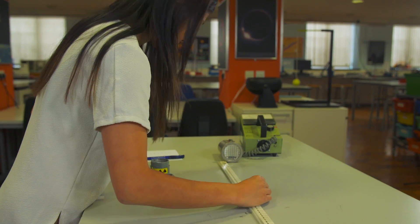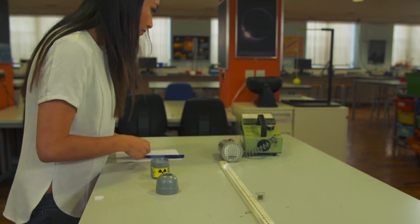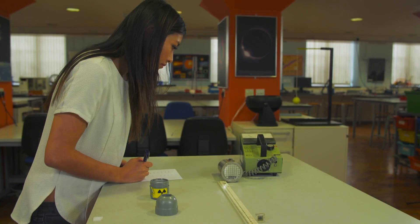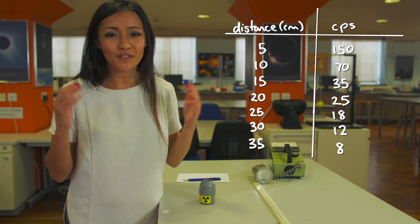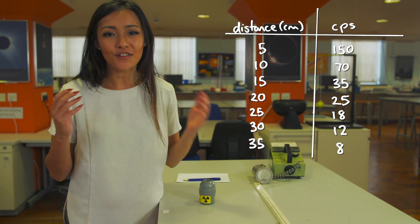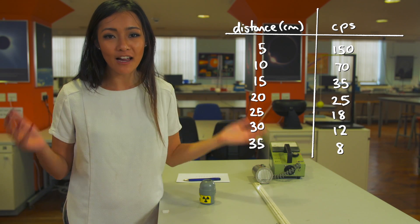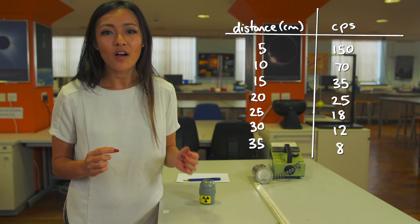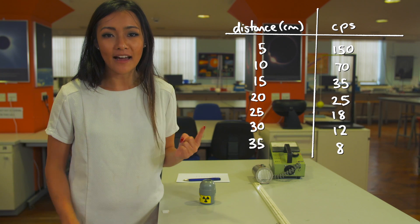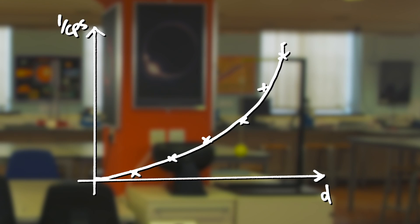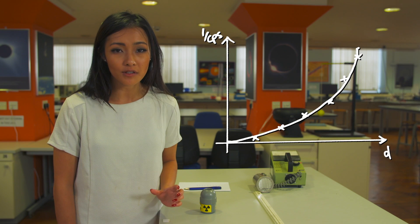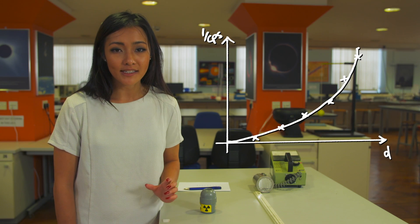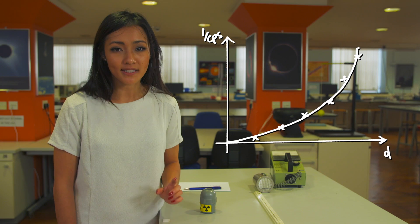After obtaining a range of distance measurements, we can make a plot of distance versus one over count rate — this is the time for one count. Note that the shape of the graph is exponential. The further away the Geiger counter is from the source, the longer it takes for one detection.